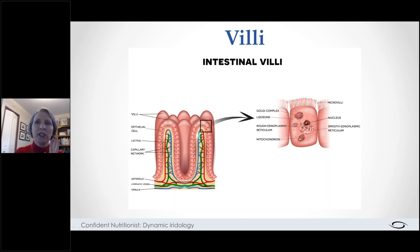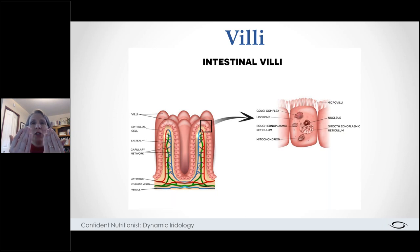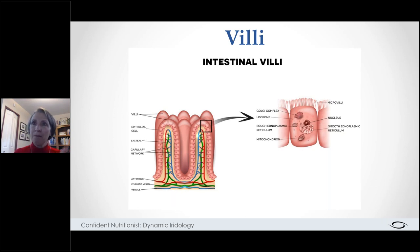Every villi contains arterial blood, venous blood, and lymphatics. The surface of the villi is lined with epithelial cells that must butt up tightly against each other — these are called tight junctions. If something goes wrong and those junctions become loose and gappy, that is when we have leaky gut syndrome. We need to keep these junctions really tight. We'll come back to an eye example of what leaky gut syndrome can look like.